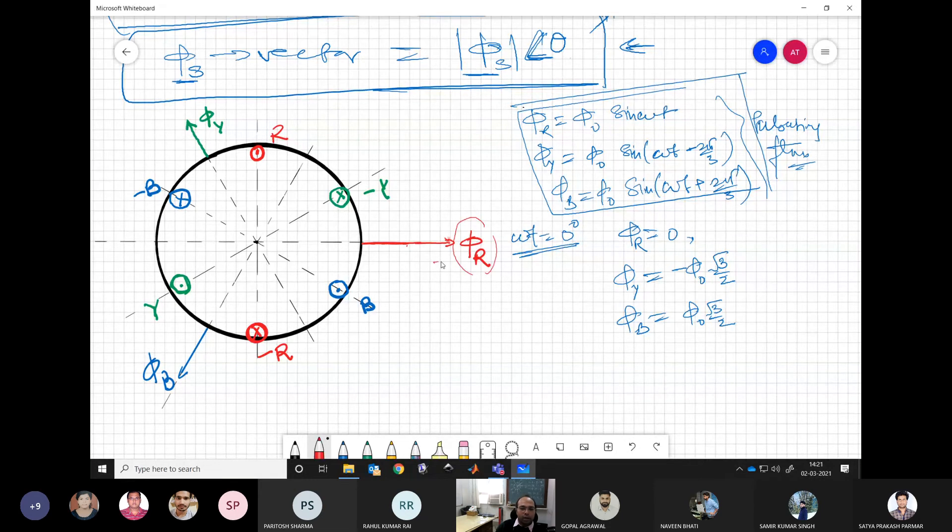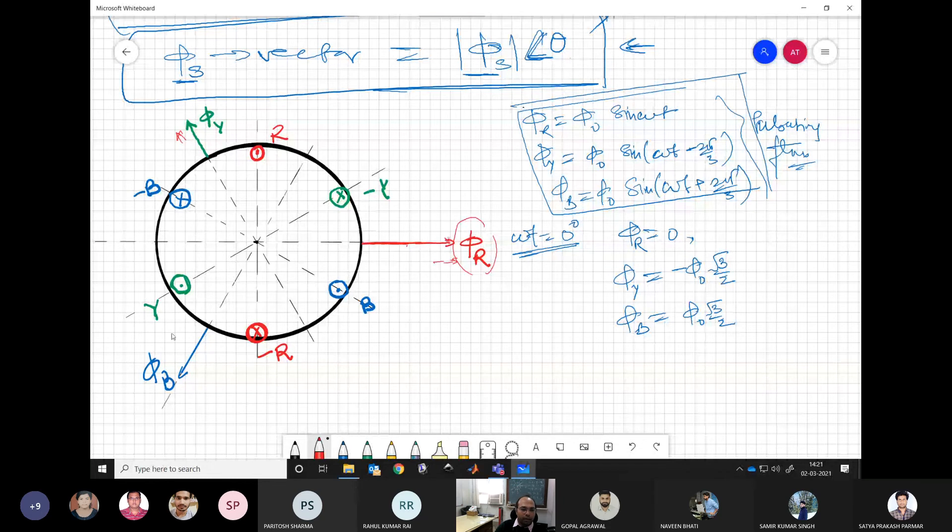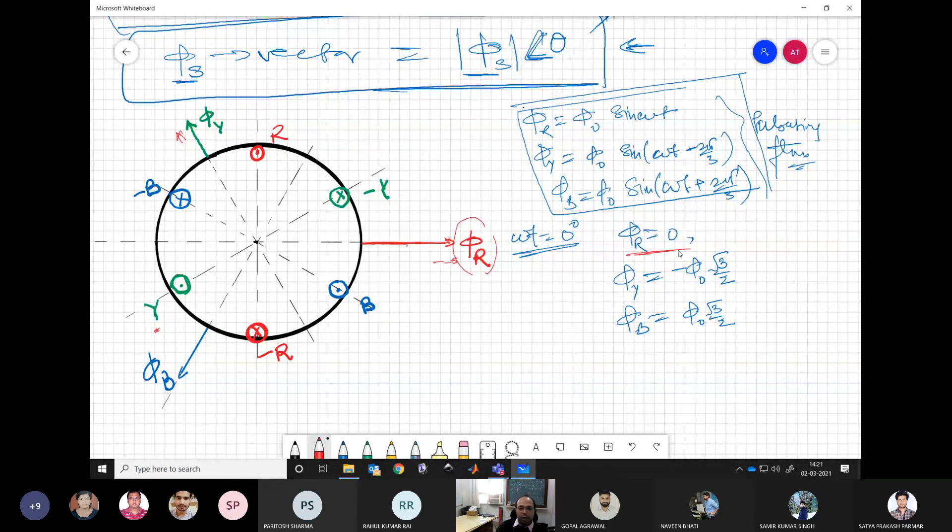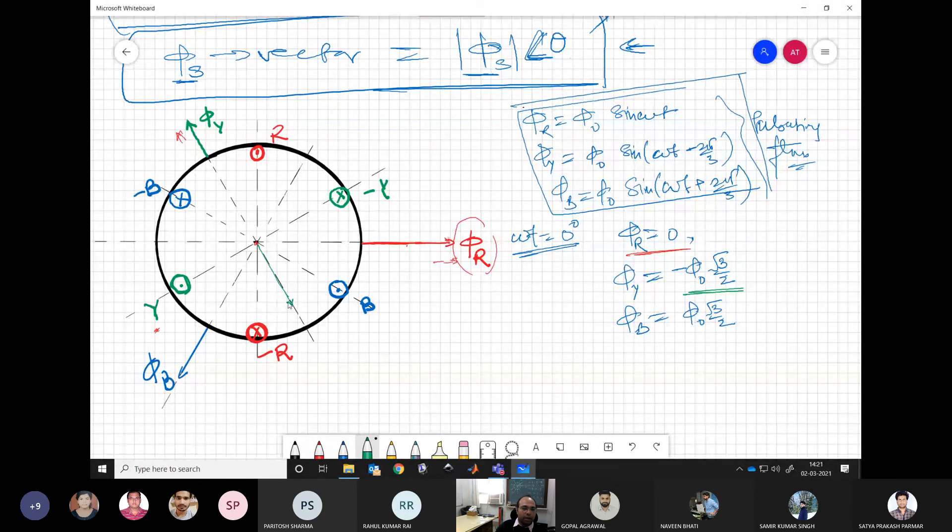So for R, this is the direction of the axis. Then for Y it is here, and B it is here. So now the value of R over here is 0, and the value of Y is minus phi naught root 3 by 2. So minus means along the negative axis, so we have to mark it somewhere here, 0.866 times.